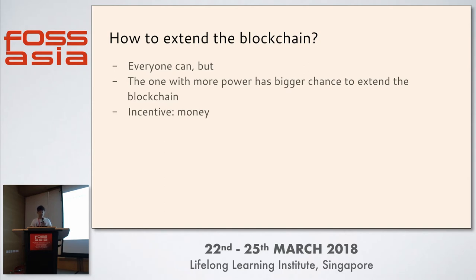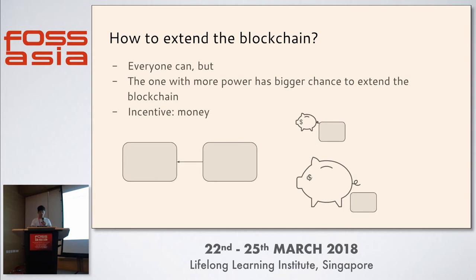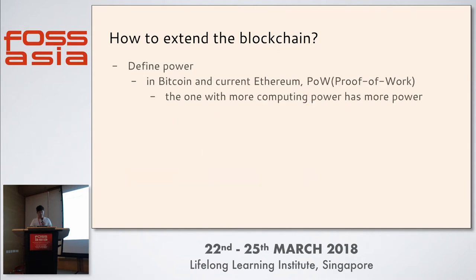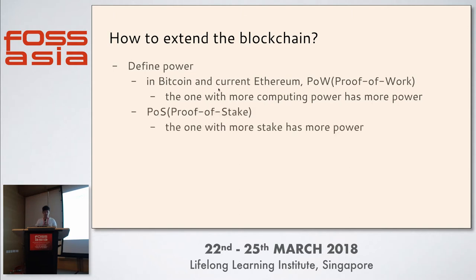The incentive of doing this is money — it is so-called mining. Assume there are two nodes, one bigger and one smaller: the chance to extend the blockchain is bigger for the one with more power. In Bitcoin and current Ethereum we use Proof of Work (POW), where the one with more computing power has more power. Another famous one is Proof of Stake (POS), where the one with more stake — how much money you have in the blockchain — has more power.